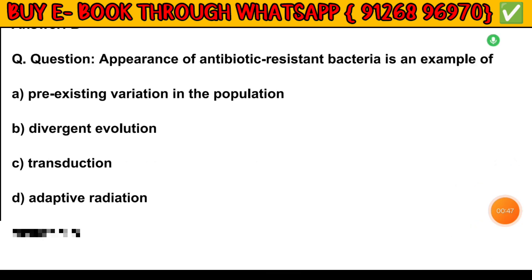Question number 14. Appearance of antibiotic resistant bacteria is an example of: Option A — Pre-existing variation in the population. Option B — Divergent evolution. Option C — Transduction. Option D — Adaptive radiation. The answer is Option A: Pre-existing variation in the population.